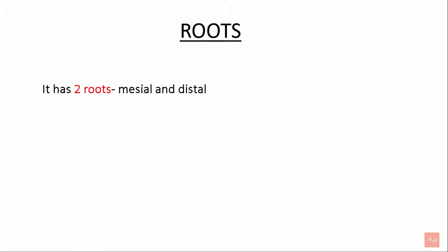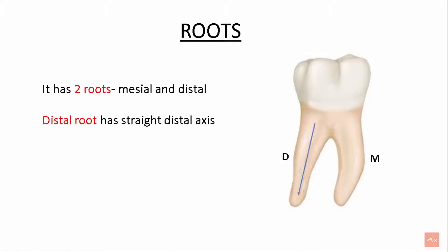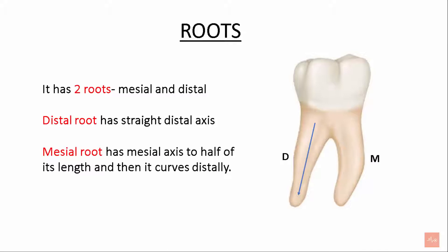The mandibular first molar has two roots: the mesial root and the distal root. The distal root has a straight distal axis. The mesial root has a mesial axis for half of its length and then curves distally.